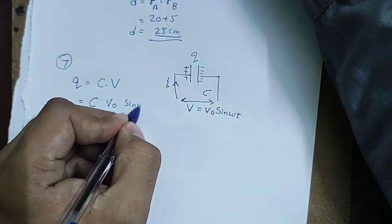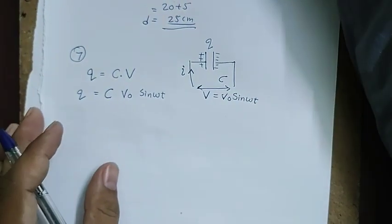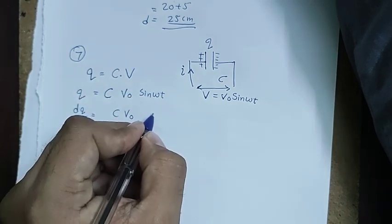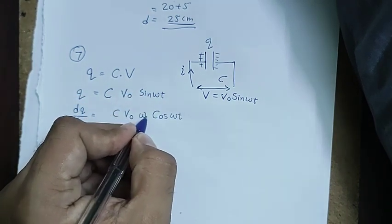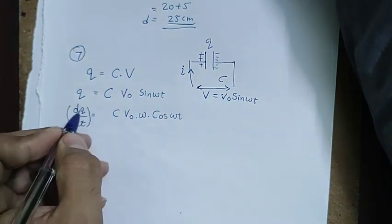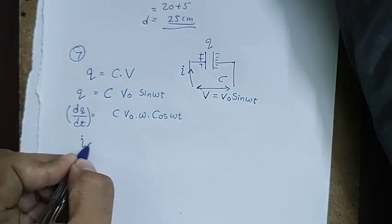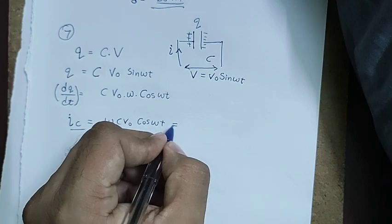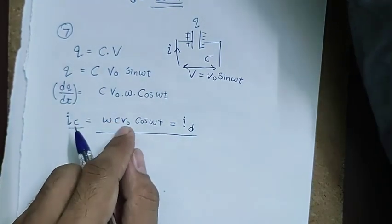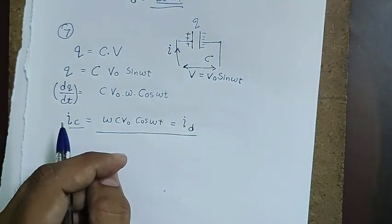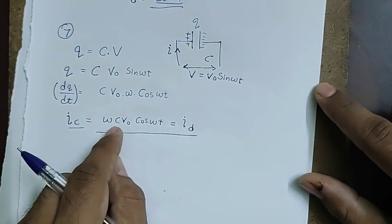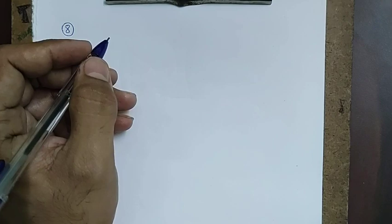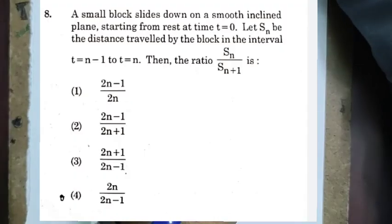The conduction current equals the displacement current. So the displacement current is ωCV₀ cos(ωt) — option 1. This is a straightforward three-step question using dQ/dt.